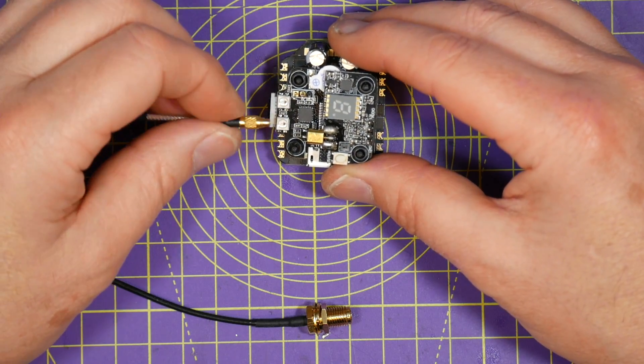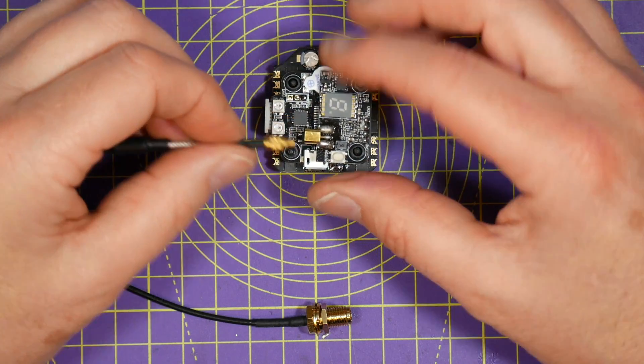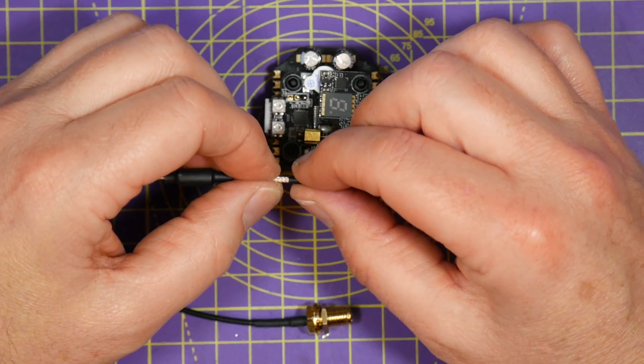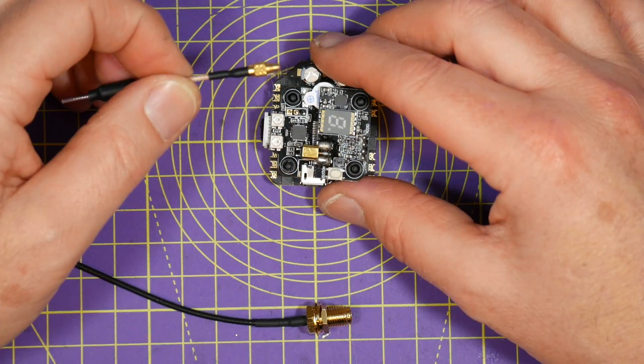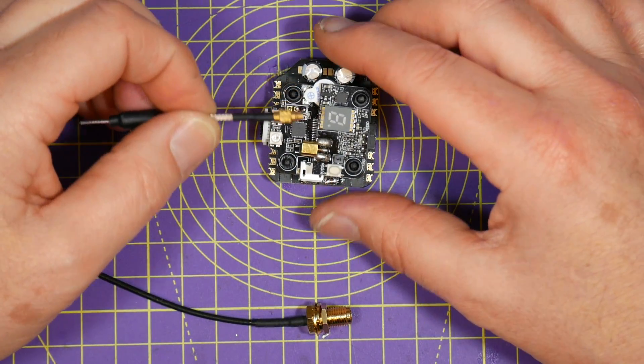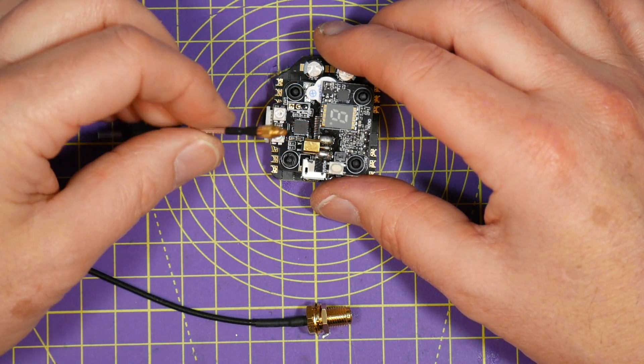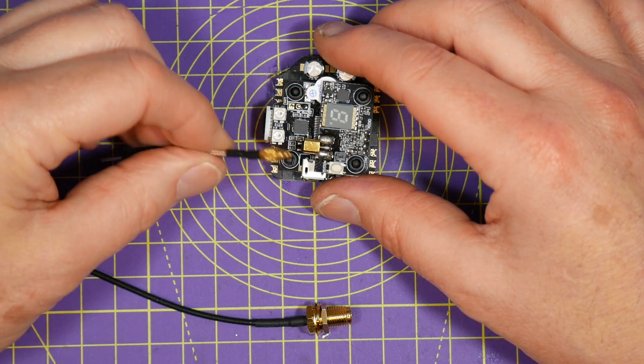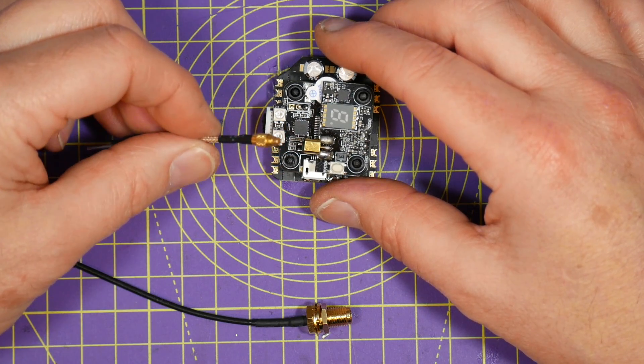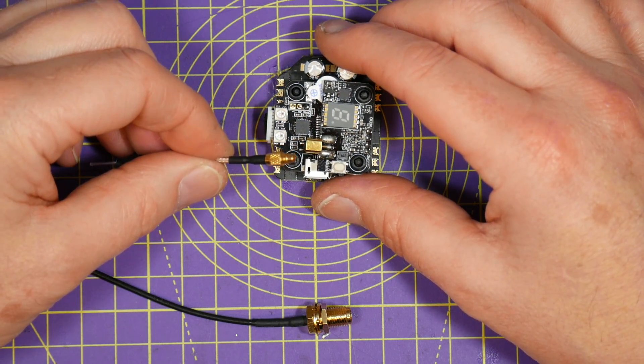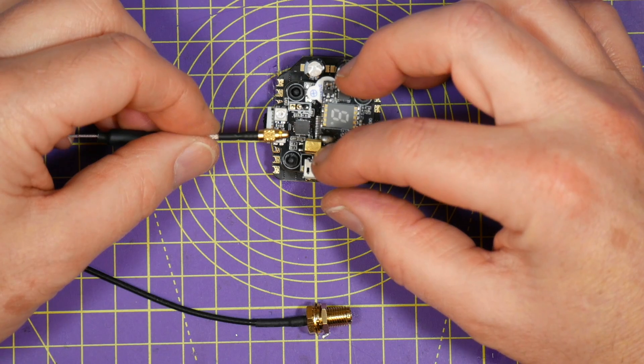There is a final option. Don't use a connector. Just solder directly to the VTX PCB. There's obvious advantage to this. It's secure and doesn't weigh anything. But you need to be handy with a soldering iron on a tiny VTX. And if you want to take anything apart or replace the antenna, you've got more soldering to do and risk damaging the pads on the VTX.